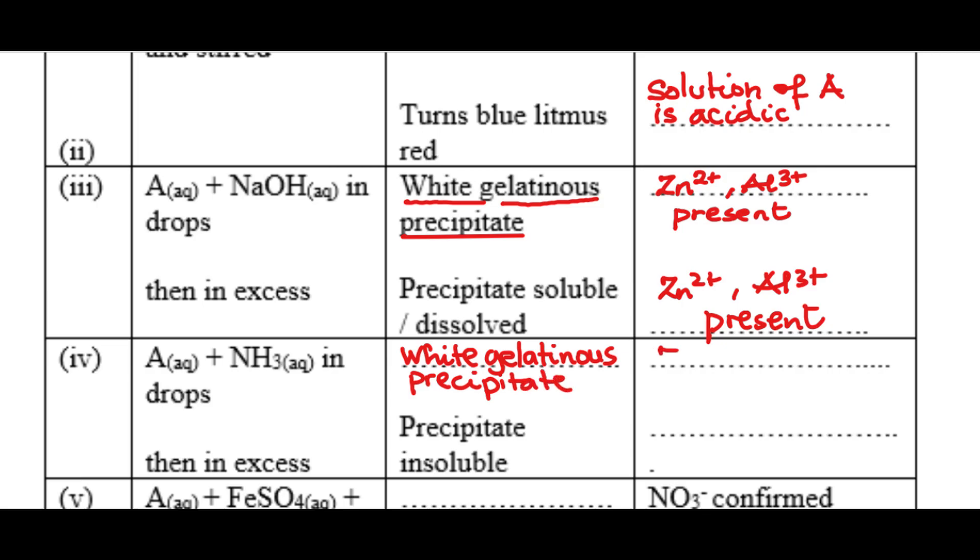So that also tells us that zinc or aluminum ions are present. Now it is the next step, the next step that's when aqueous ammonia is added in excess that differentiates between these two ions. Precipitate insoluble. Because the precipitate is insoluble, it means that aluminum ion is present. If the precipitate had dissolved, we would have concluded that or we have confirmed that zinc ion is present. But since the precipitate did not dissolve, it means zinc ion is absent and definitely aluminum ion will be present. So aluminum 3+ present or you can say aluminum 3+ confirmed.